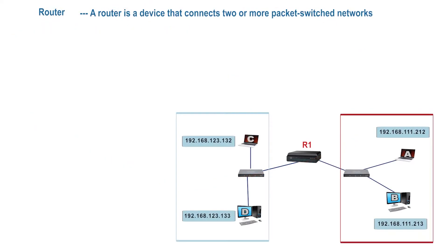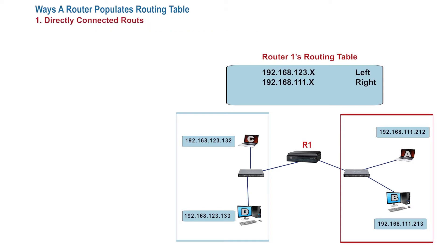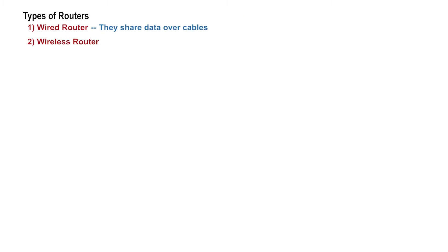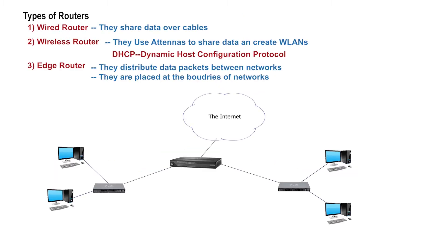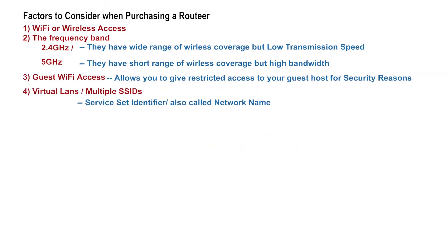We again learnt about routers and how they work. We learnt that routers move packets between networks, and before they do that successfully, they have to register their routes in a routing table. This is possible through three ways: either by directly connected routing, static routing, or dynamic routing through dynamic routing protocols. We also spoke about types of routers and factors to look out for when purchasing a router. It is highly recommended you watch the previous video before continuing; the link is in the description below.